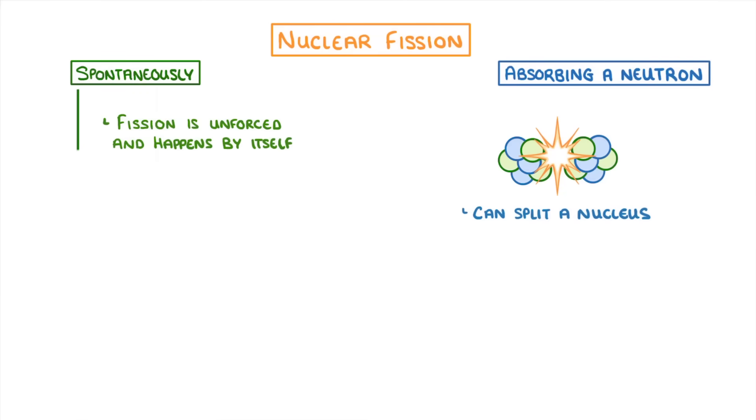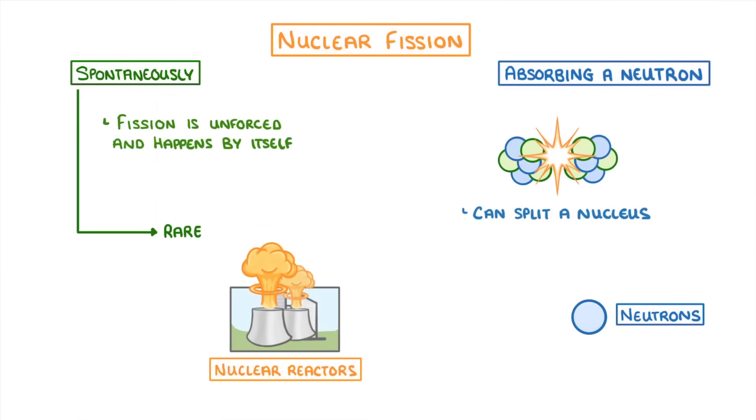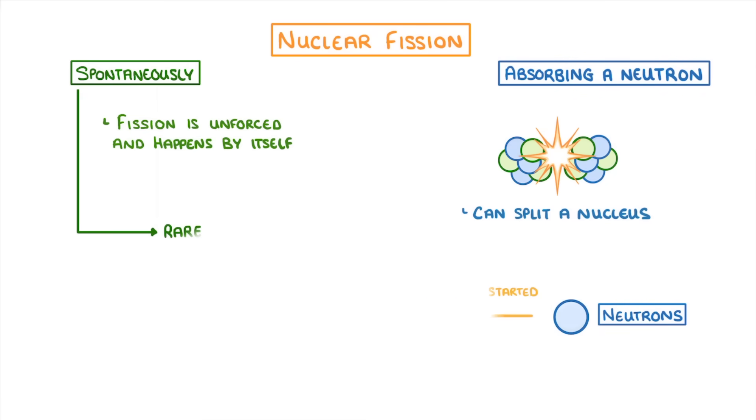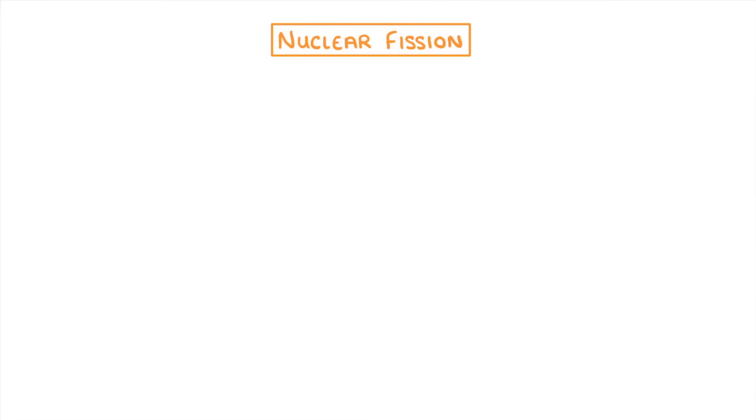In practice, spontaneous fission is rare, and so when we use fission in nuclear reactors, we have to use neutrons to get the process started. To understand how the process works, let's go through the steps.